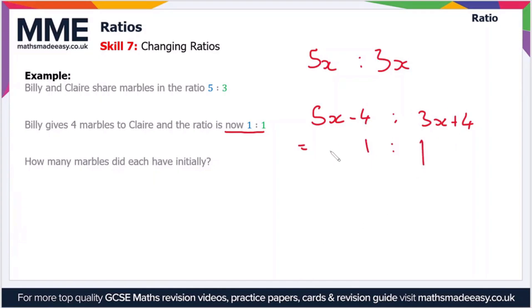So we can write this ratio as a fraction with one part divided by the other part. So let's say that 5x minus 4 divided by 3x plus 4 is equal to 1 over 1. And now all we do is solve for x.